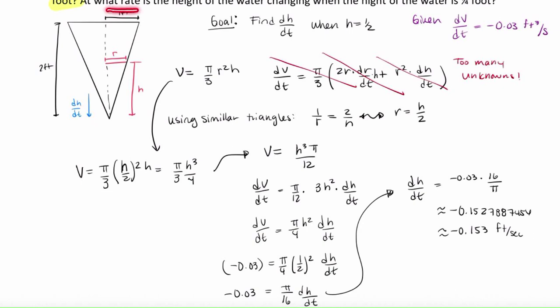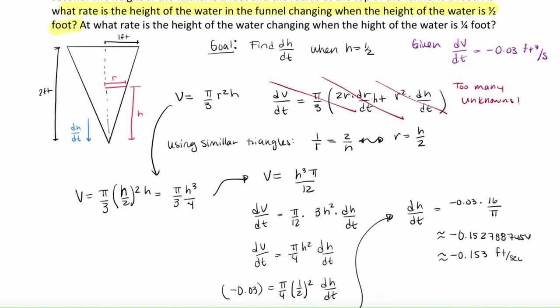So the follow-up question here. At what rate is the height of the water changing when the height of the water is a quarter foot? Well, the only difference is this. So see if you can figure out independently what this value is. So what the answer to this second part is. At what rate is the height of the water changing when the height of the water is one quarter foot? Well, if you notice, we only use the one half foot here. So that's the only change. See if you can figure that out independently. Pause your video and try that now.